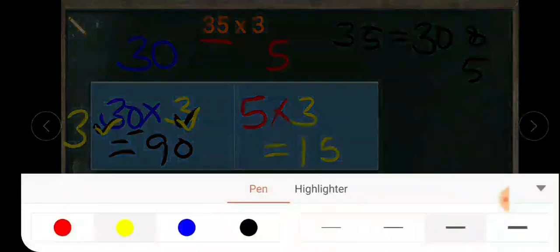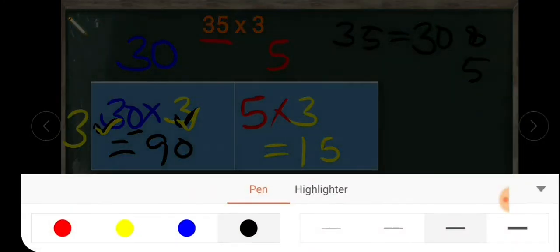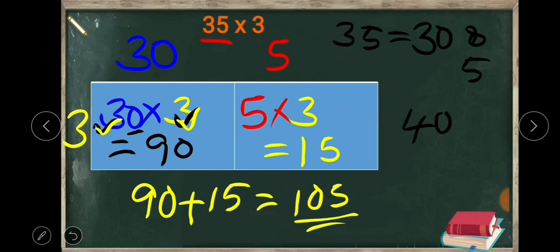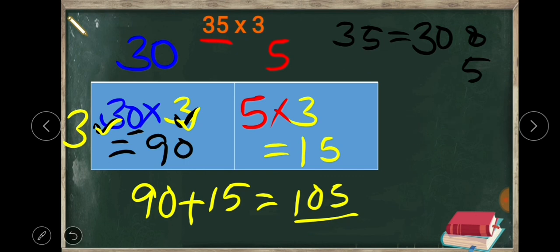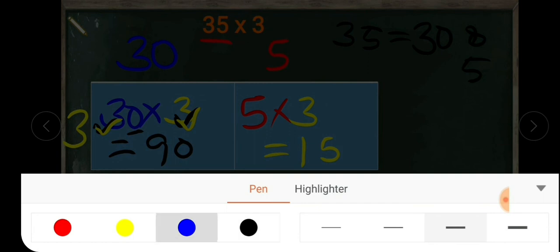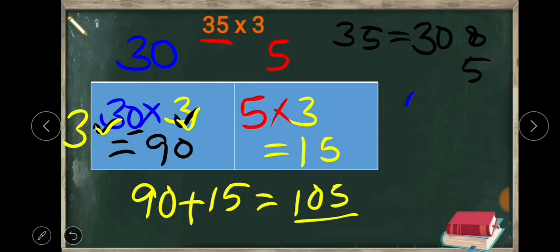Now I will show another thing — how we multiply 40 into 2. Multiply 4 into 2, which is 8, then write the 0, so 40 into 2 is 80. It's a trick. Like this we can multiply any number. For example, 60 into 4: multiply 6 and 4 — 6 fours are 24 — then write the 0, so the answer is 240.